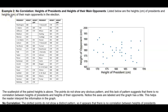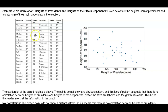Example 2: No correlation. Listed below are the heights in centimeters of presidents and heights in centimeters of their main opponents in the election. The ones that are listed have both heights recorded because, for example, with Washington, we don't know the heights — they were left blank because those particular heights weren't available. This is the data collected from the back of the textbook.